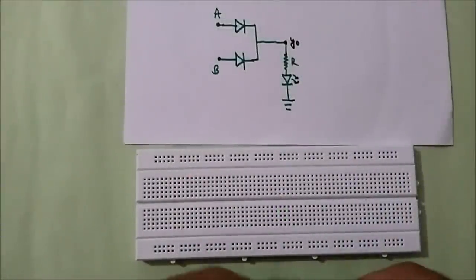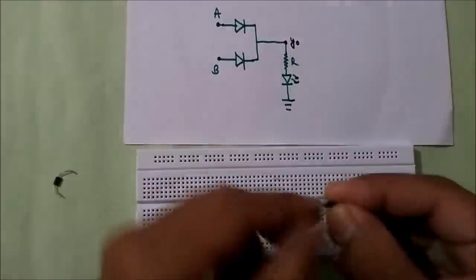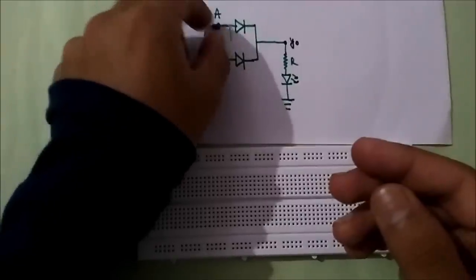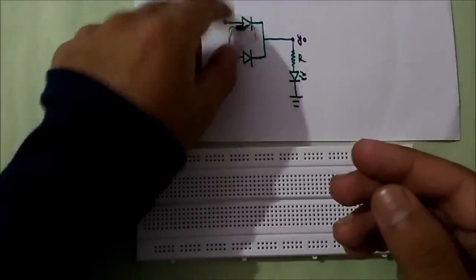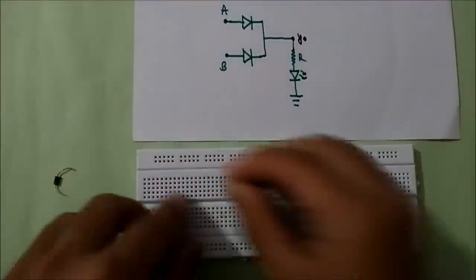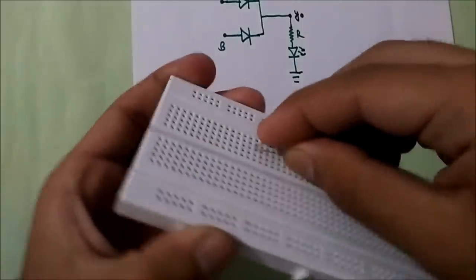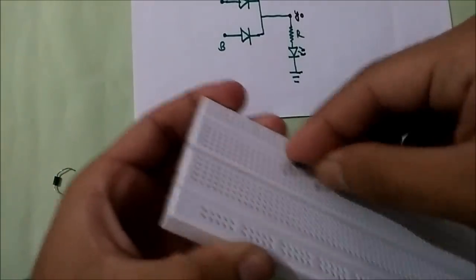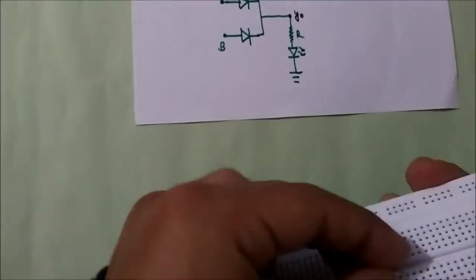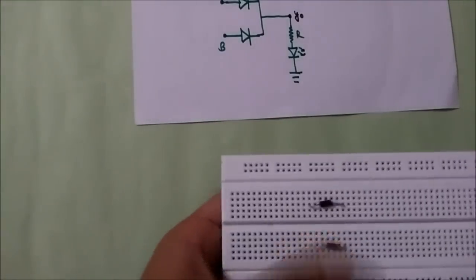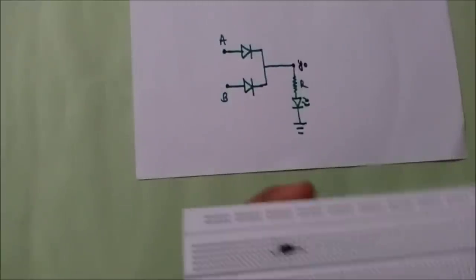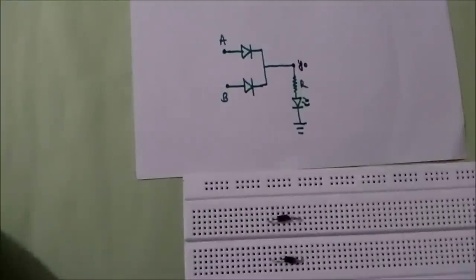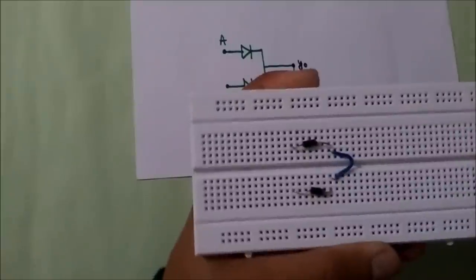For this circuit I need 2 diodes — I'll use 2 1N4007 diodes. The P terminal is the black side whereas the N terminal is the silver side. I'll just connect them here like this. Now the N terminals are connected together, so I'll connect them with a short wire.